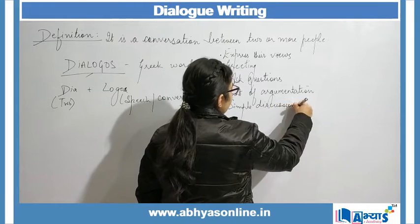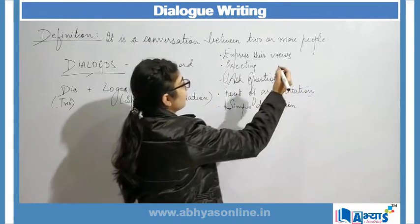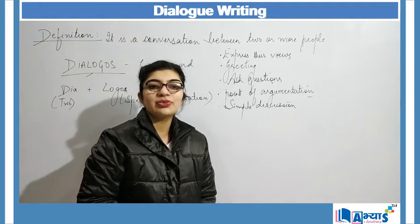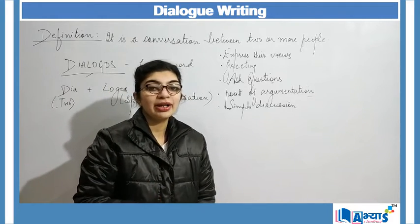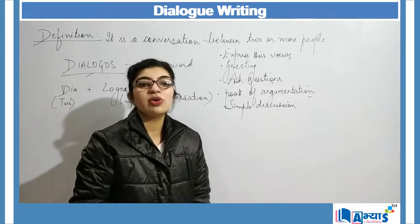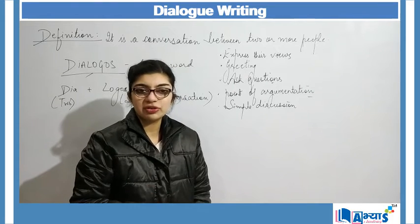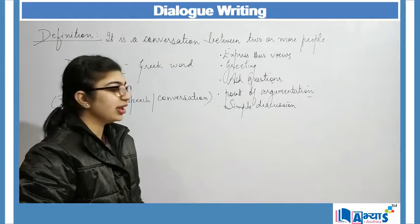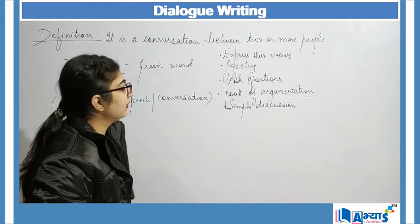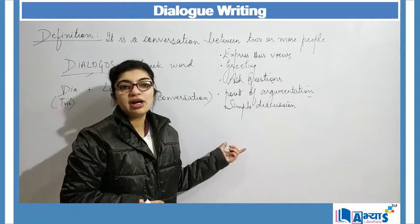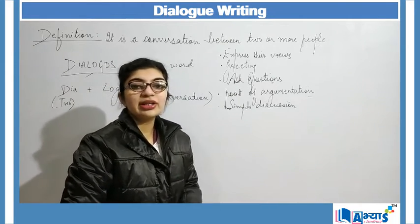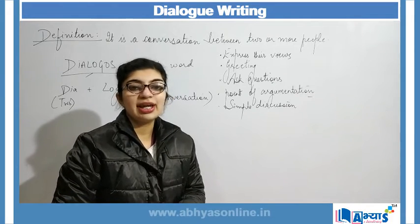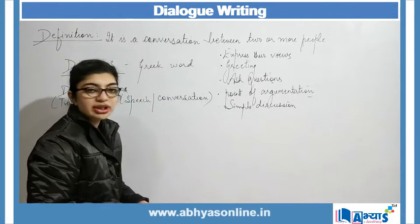A discussion always takes place when people argue, ask questions, or express their views. One person will express a view and the other might contradict or favor it. Accordingly, a dialogue is exchanged between the two people. Dialogue writing is a very important tool in areas where dialogues are exchanged.